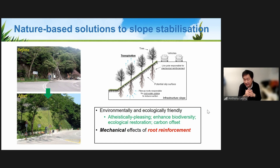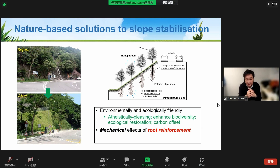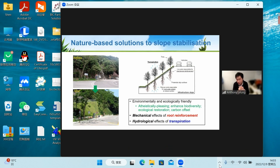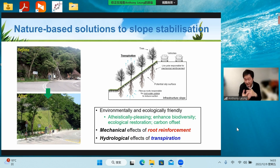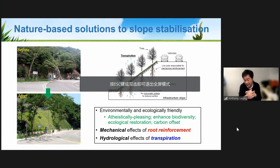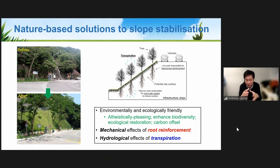Mechanically speaking, plant roots could reinforce the soil, particularly in the shallow region, to improve slope stability. Hydrologically, plants transpire, causing soil drying which increases the soil matrix suction and also increases soil strength. Today I will focus mainly on the mechanical effect — to explore further how root reinforcement can be beneficially used in slope stabilization problems.